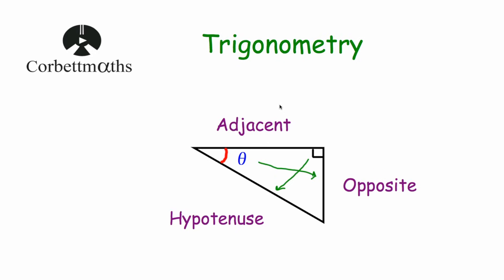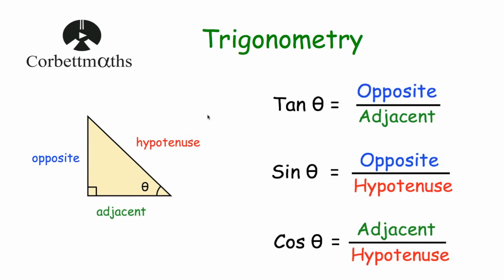So now we know how to label the sides of a right-angled triangle, let's have a look at our trigonometric ratios. So if we've got a right-angled triangle with a right angle, the hypotenuse opposite it, our angle theta, the side opposite it called the opposite, and our adjacent — the trigonometric ratios are: tan theta equals opposite divided by adjacent, sine theta equals opposite divided by hypotenuse, and cos theta equals adjacent divided by hypotenuse.